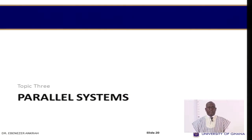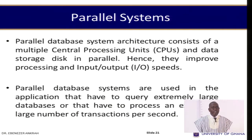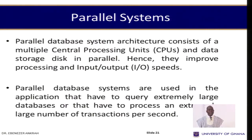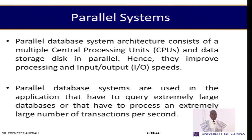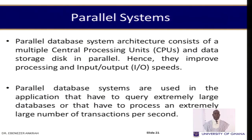Now let's turn our attention to parallel systems. Parallel database system architecture consists of multiple central processing units and data storage disks operating in parallel, which improves processing and input speeds. Parallel database systems are used in applications that have to query extremely large databases so that they can be processed simultaneously. In a parallel database system, different systems run concurrently, and extremely large amounts of transactions per second can be handled.